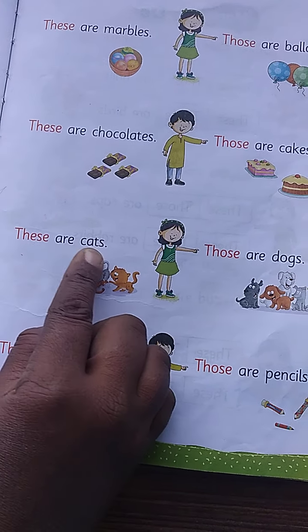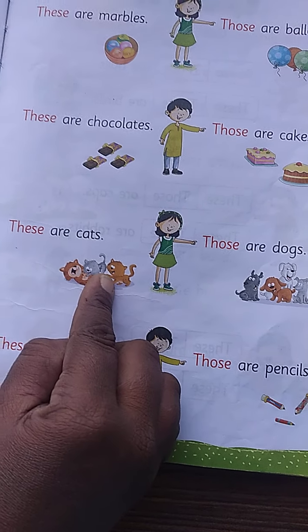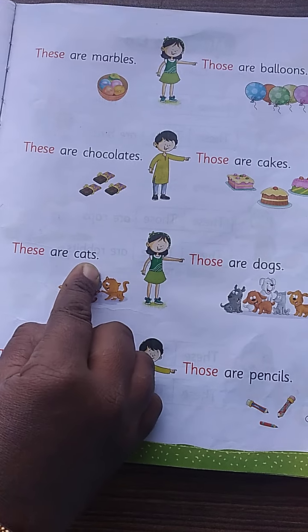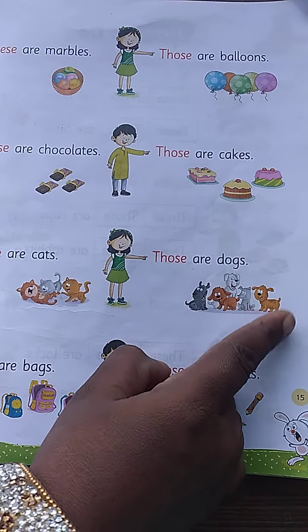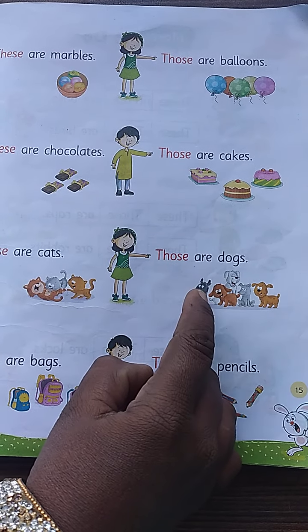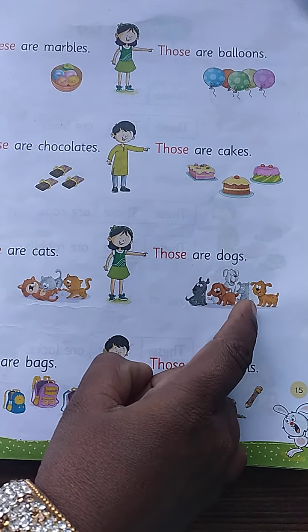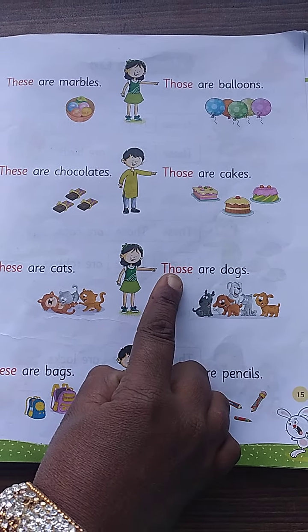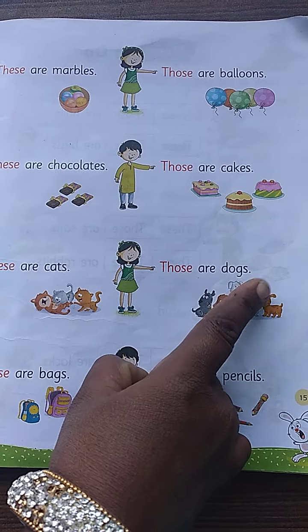These are cats. Cats are near the girl, so here use these are cats. Those are dogs. Five dogs are there — one, two, three, four, five. Dogs are far, so here use those. Those are dogs.